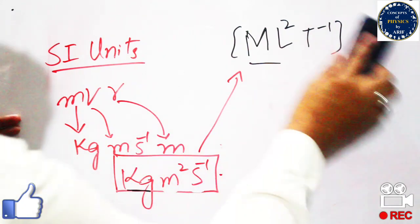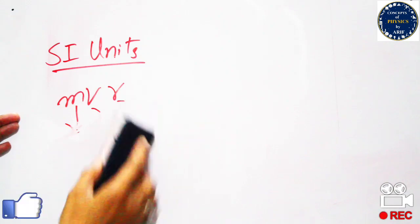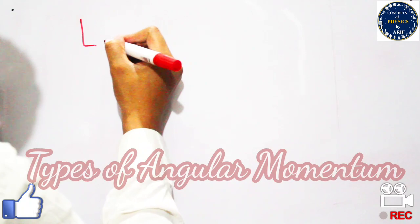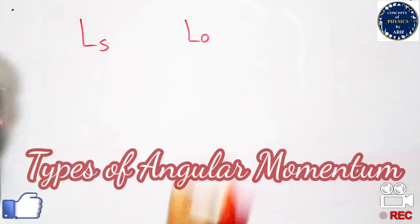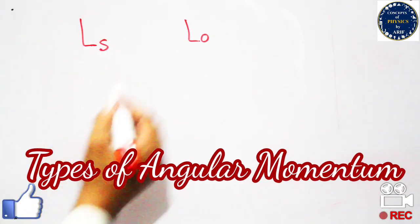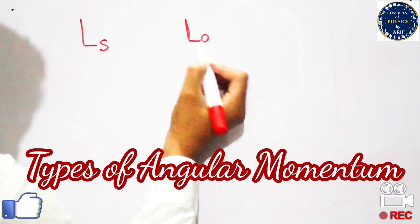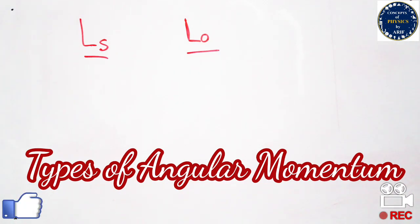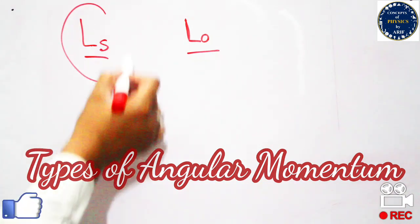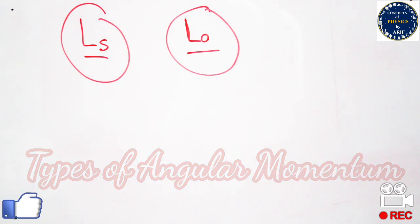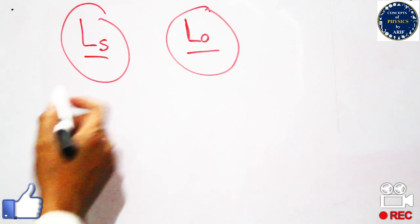We have finished covering the definition, formula, and SI units. Now we will look at the types of angular momentum. Basically there are two types: spin angular momentum, denoted L subscript s, and orbital angular momentum, denoted L subscript o. These terms often confuse students in entry-level exams because they are not well explained in textbooks.